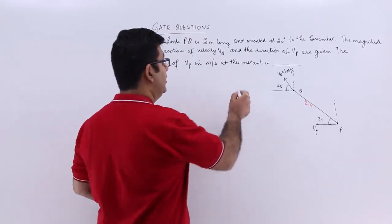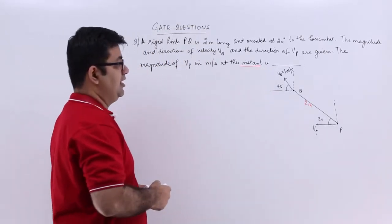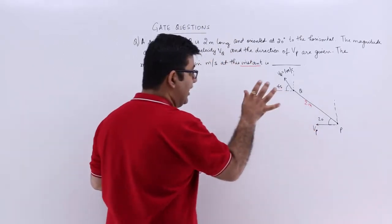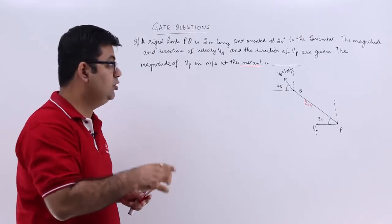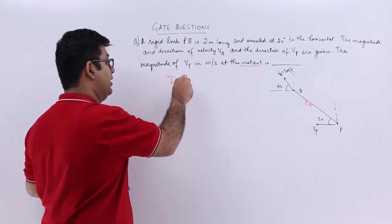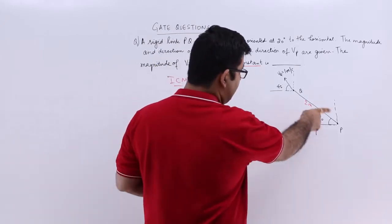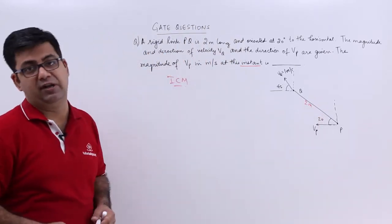When this word 'instant' comes, it means you have to find the value of vp at this particular moment using the instantaneous center method. I will have to find out the instantaneous center for this configuration.